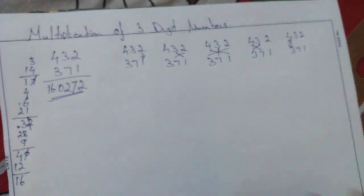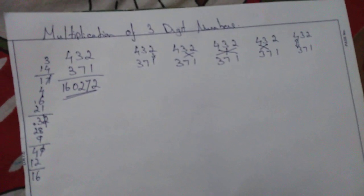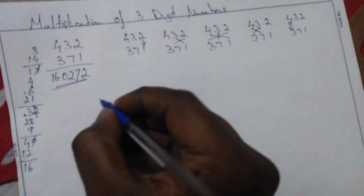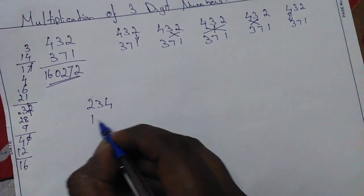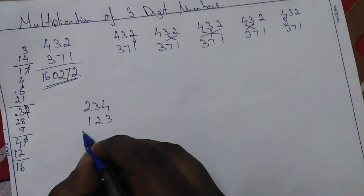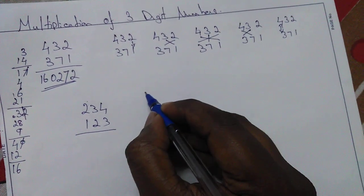Let's see with one more example using the same method. Let's have 234 times 123, using the same 5-step method.